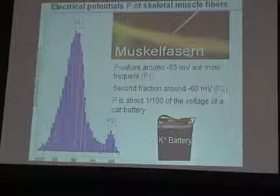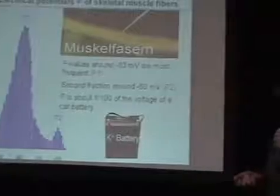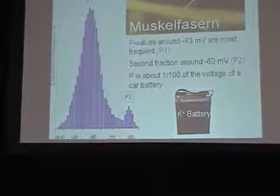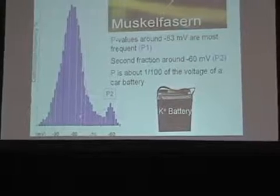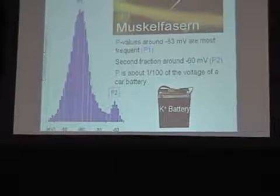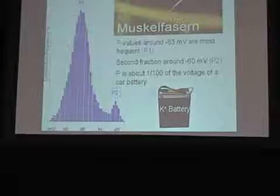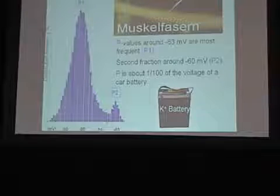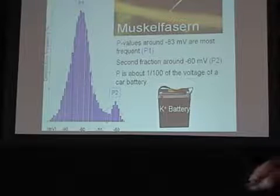Muscle fibers, like most cells, are electrical — they have electricity. Therefore you can measure an ECG from the heart or an EEG from the brain. We were very surprised: this second population of fibers showed depolarized membrane potentials, which was completely new. Everybody in the field of physiology had seen only the one peak, and we wondered whether the function of these depolarized muscle fibers differs from the normally polarized ones.